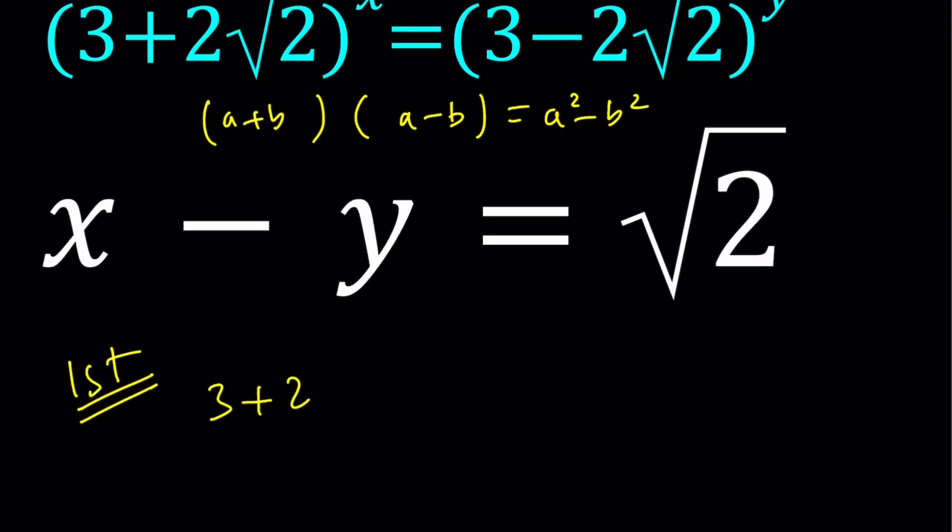When we multiply two conjugates, we get something nice. We actually use this idea to rationalize the denominator. If you have any irrational number at the bottom, something like 5/(√3+1), we multiply by the conjugate to get rid of the radical at the bottom because we don't like it. It doesn't look good.